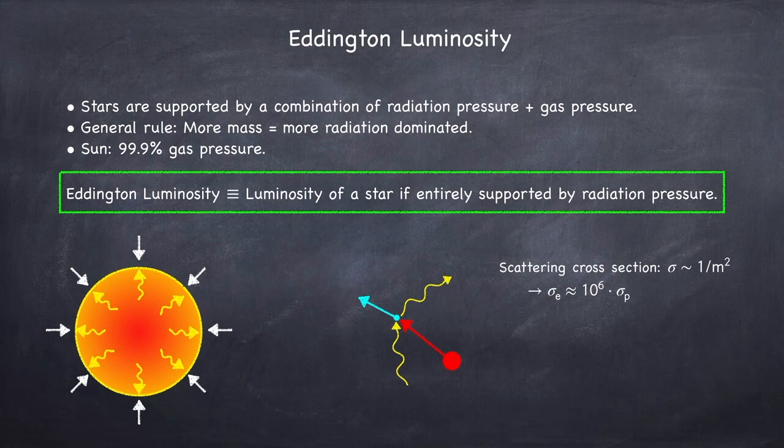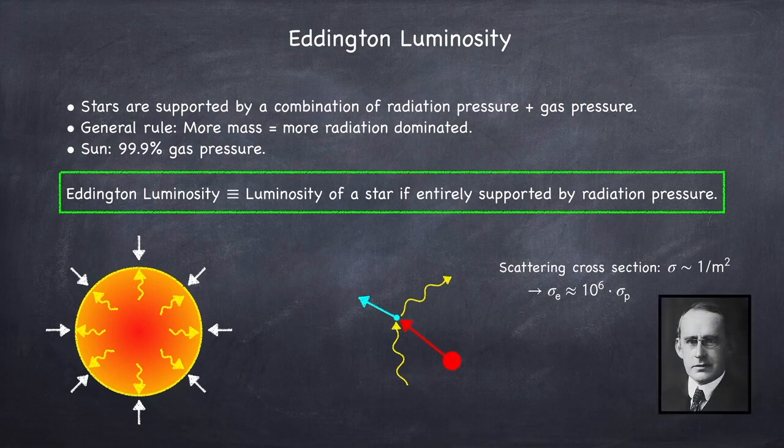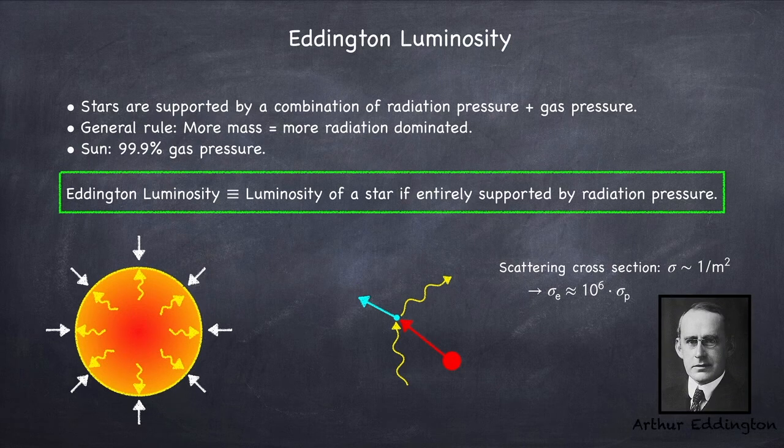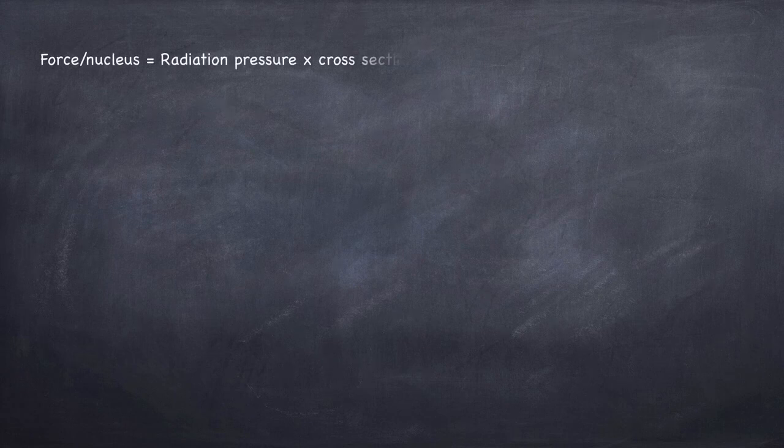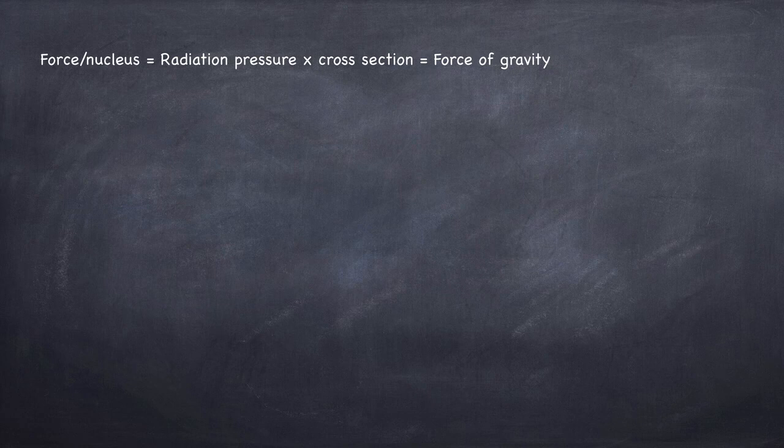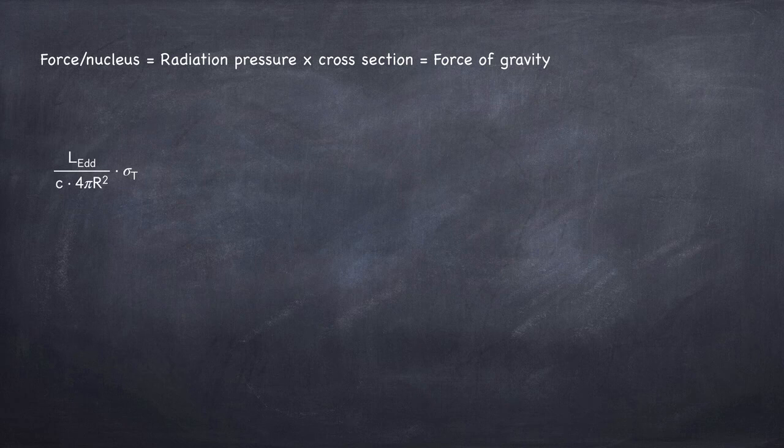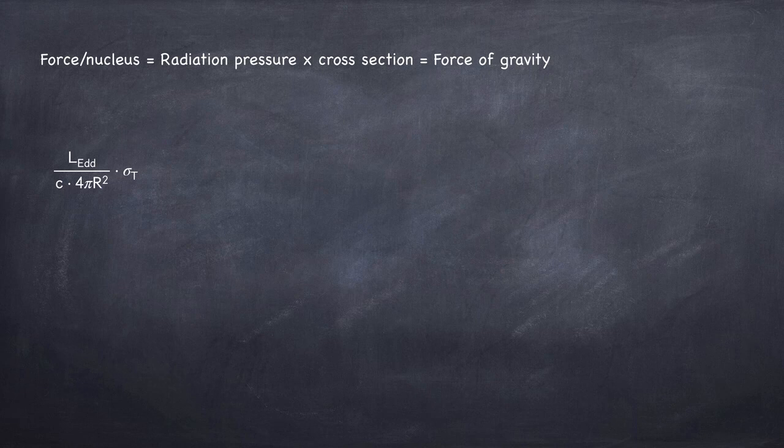The Eddington luminosity gets its name from Arthur Eddington, who first derived it. Now let's calculate what this luminosity is. The force on a single nucleus will be the radiation pressure times the cross-section, and this has to balance out the force of gravity. We can write this force as the luminosity divided by the speed of light divided by the surface area of the star times the Thomson cross-section.